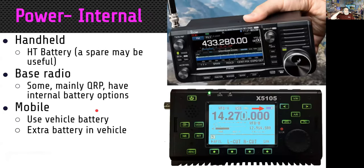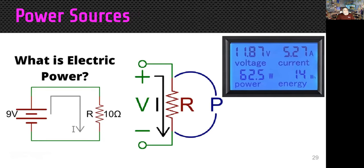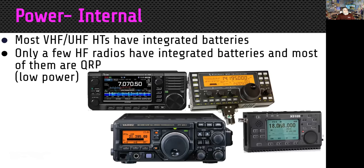So that's it for antennas — let's talk about power. Power is the other big consideration in the field. Some radios have internal batteries — a handheld is the common example. Some QRP radios also have internal batteries. Mobile radios use the vehicle battery. Radios with integrated battery packs include the Yaesu FT-897 (no longer available, had two battery option slots, operated at about 40 watts), the ICOM IC-705 with built-in battery, the Xiegu 5105 and the brand-new Xiegu X6100, and the Elecraft KX2 or KX3 with internal battery capability.